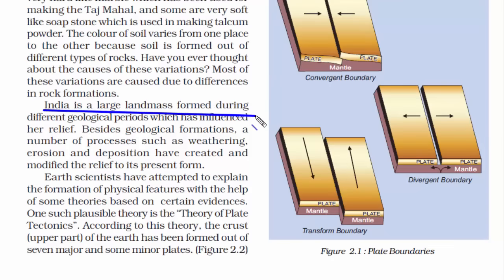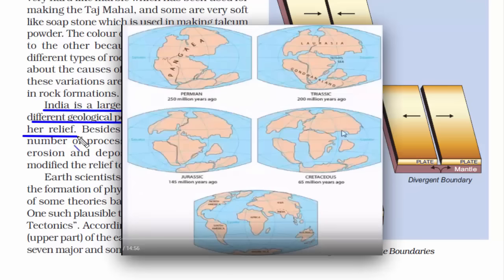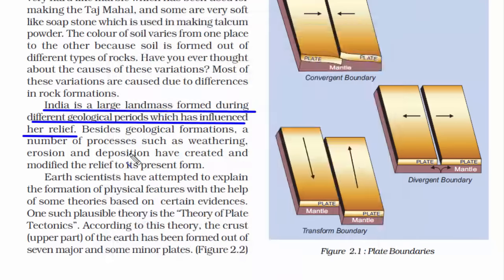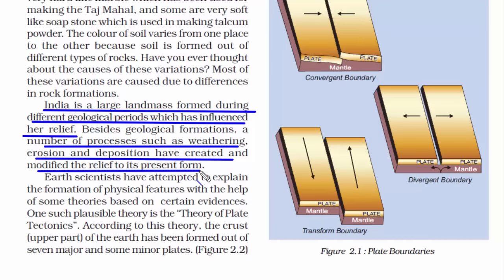India is a large landmass formed during different geological periods. As shown in the previous chapter, India broke apart from the Australian plate and moved towards the Eurasian plate, going through constant physical changes. Processes such as weathering, erosion, and deposition have created and modified the relief to its present form.